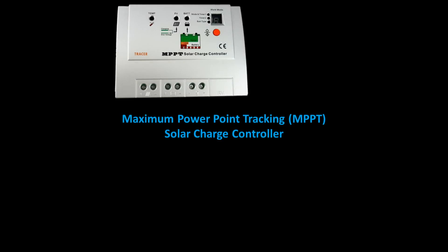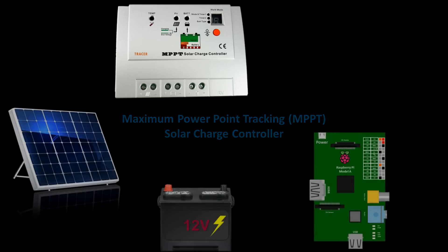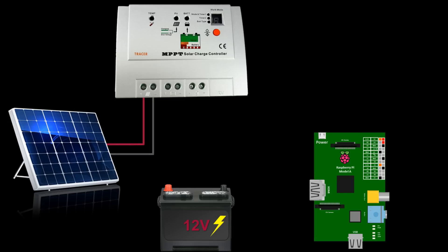Here's a maximum power point tracking, or MPPT, solar charge controller. It converts the higher voltage DC output from a solar panel down to the lower voltage needed to charge batteries, and it does so in an efficient manner. Hooking it up is very intuitive — the positive and negative outputs from the solar panel connect to the corresponding terminals on the controller.